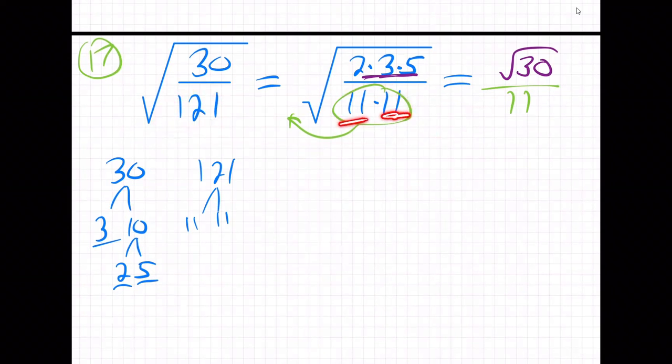because it's two 11s, and remember, square roots are two-for-one deals. So two 11s inside sends one 11 outside, out of the root. But on the top, there's not two of anything—just one 2, one 3, one 5.